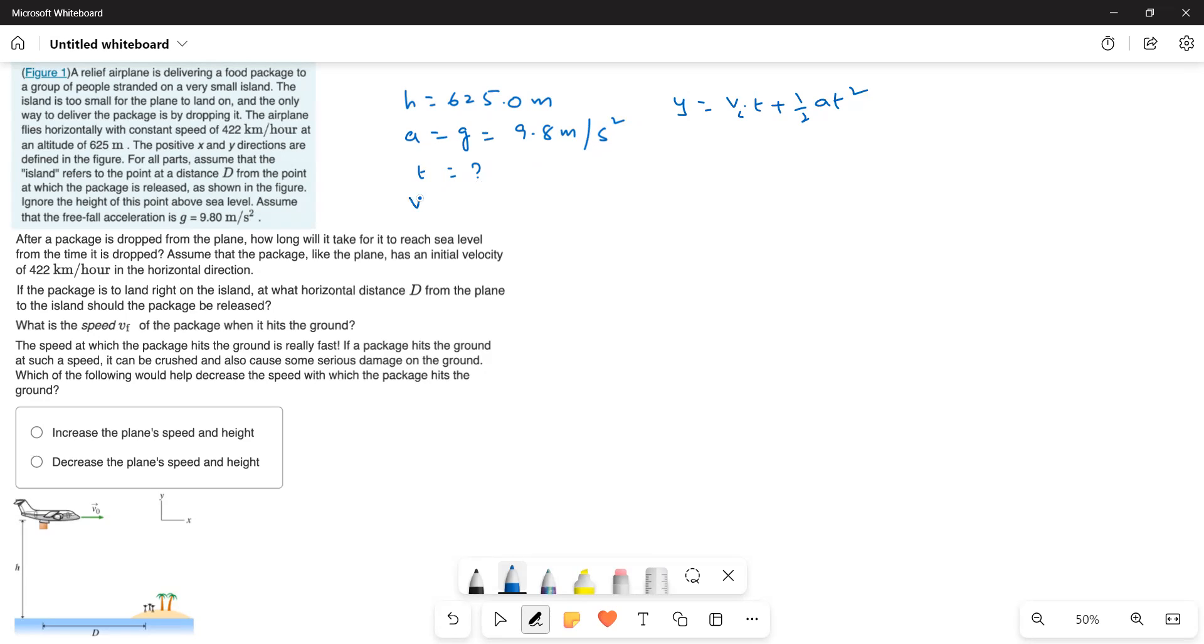Along the y direction, velocity is 0, v_iy is equal to 0, that is what I am going to use here. And then I take a is equal to negative 9.8 and then h also negative because the package is falling downwards. So, negative 625 is equal to 0 plus half into negative 9.8 times t squared. Therefore, t squared is equal to negative 625 divided by 9.8 or t is equal to 11.29 seconds.